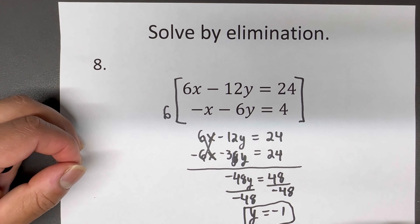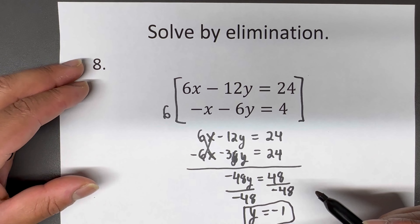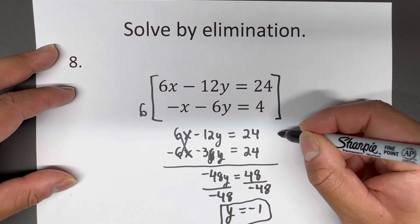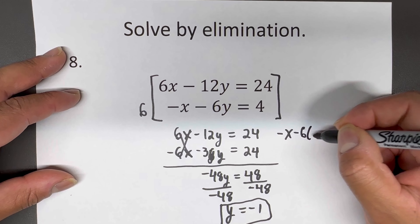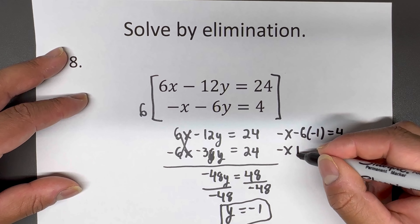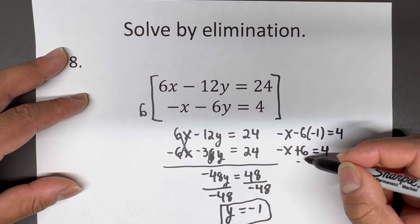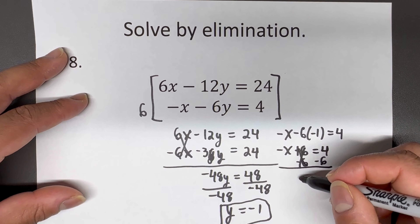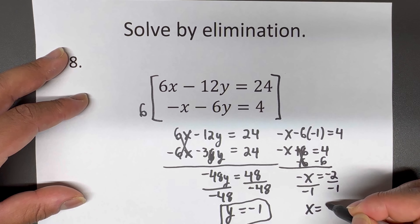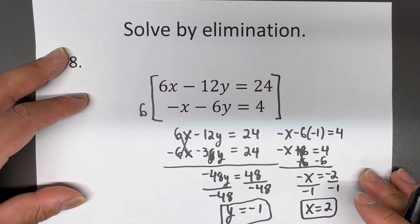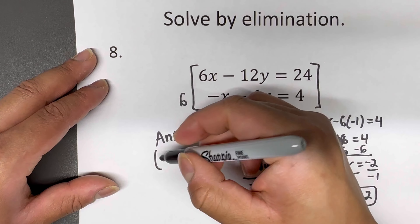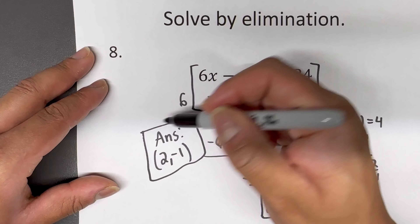Now I plug Y equals negative one into the second equation: negative X minus six times negative one equals four, giving negative X plus six equals four. Subtracting six from both sides gives negative X equals negative two, and dividing by negative one gives X equals two. The solution is (2, -1).